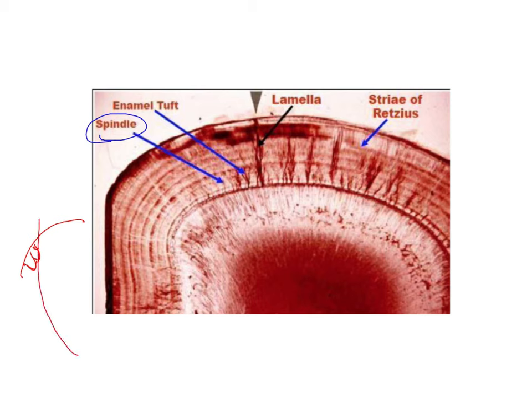Sometimes the odontoblastic process goes and gets embedded itself into the enamel. When it goes and gets embedded in the enamel, the structure appears somewhat like this which you will see within the enamel, and this is what is called an enamel spindle. So an enamel spindle is nothing but the odontoblastic process or terminal portion of the odontoblast which is present in the enamel.